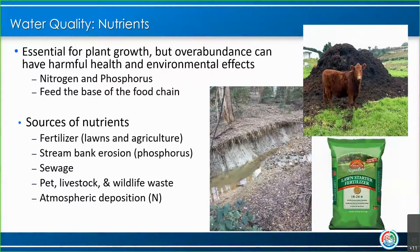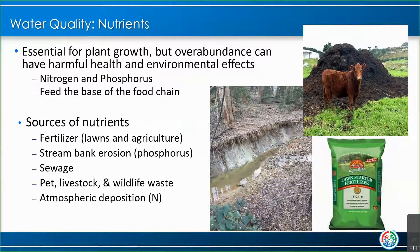Nutrients like nitrogen and phosphorus are essential for plant growth and form the very basis of the aquatic food web. However, when you have an overabundance of nutrients, it can have harmful health and environmental effects. Nitrogen and phosphorus are the two other major pollutants the EPA told the states to reduce for the Chesapeake Bay TMDL — you need to reduce nitrogen, phosphorus, and sediment entering your waterways. Sources of nutrients include fertilizers put on lawns or agricultural areas, stream bank erosion — a big issue in Fairfax County where phosphorus bound to that sediment is being carried downstream — sewage or animal waste, and for nitrogen, it can also come from the atmosphere.